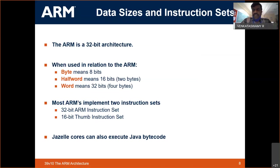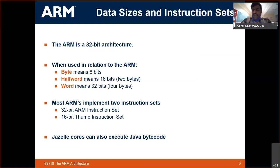With the Thumb instruction set, the time required is less. For example, if four 32-bit ARM instructions each take one microsecond, total time is four microseconds. Using the Thumb instruction set, those four instructions might be optimized to three instructions, taking only three microseconds. The Thumb instruction set is proven to be faster compared to the 32-bit ARM instruction set, and it is a very good feature of ARM.